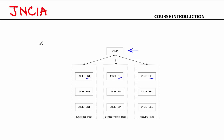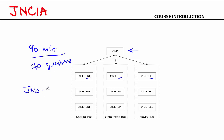JNCIA is a written examination lasting 90 minutes, consisting of 70 multiple choice questions. The exam code for JNCIA is JN0-102. Once you pass this examination, you have a certificate that's valid for two years, after which you have to renew it by writing JNCIA again or by writing a higher level certification like JNCIS. That's some basic information about JNCIA certifications.